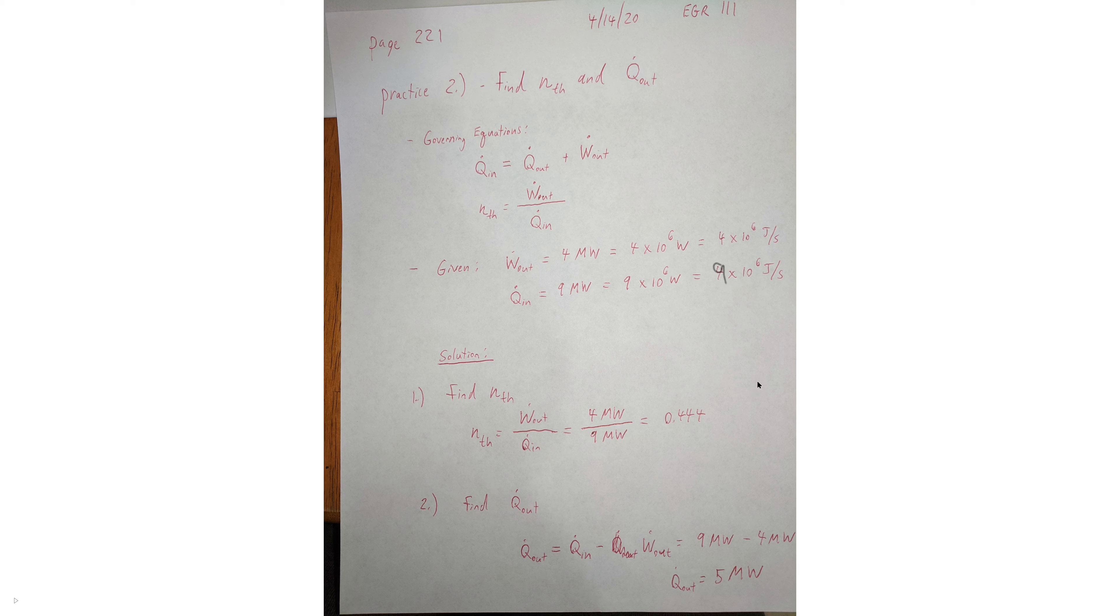First, I'm going to find the thermal efficiency of this heat engine. It's the rate at which work is being done divided by the rate at which energy is coming in. So it's just 4 megawatts over 9 megawatts. Units all cancel, and you're left with a thermal efficiency of 0.444.